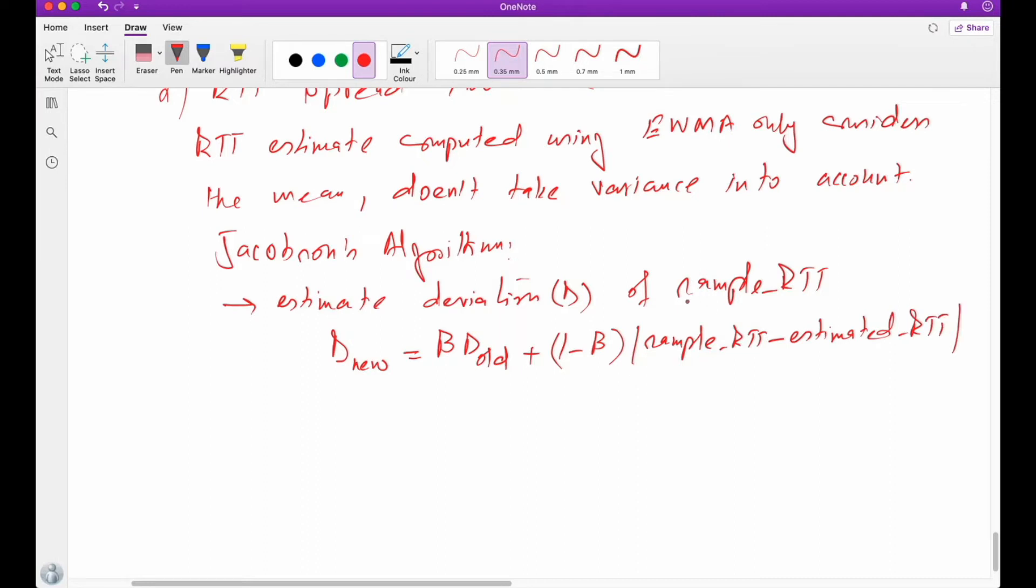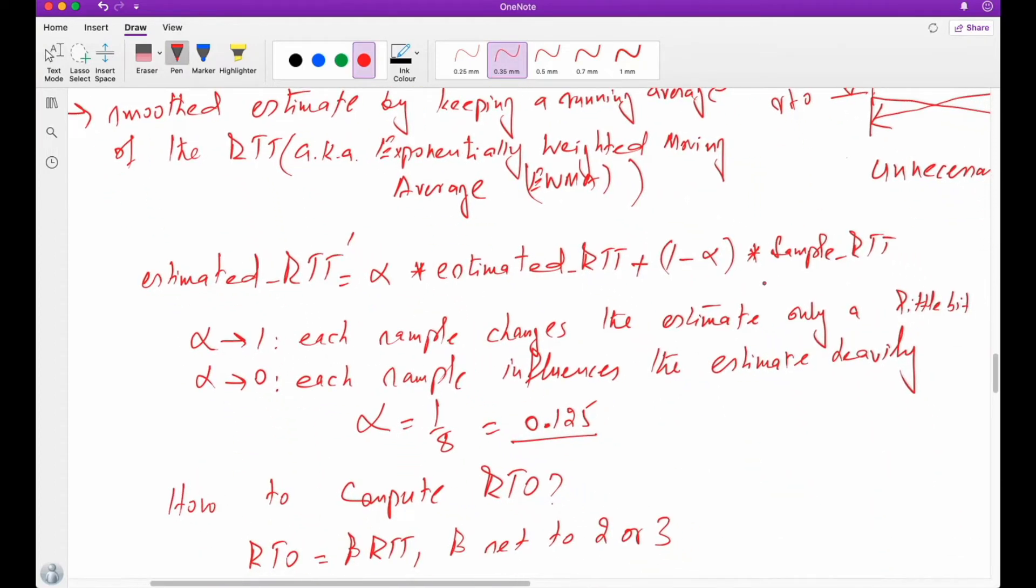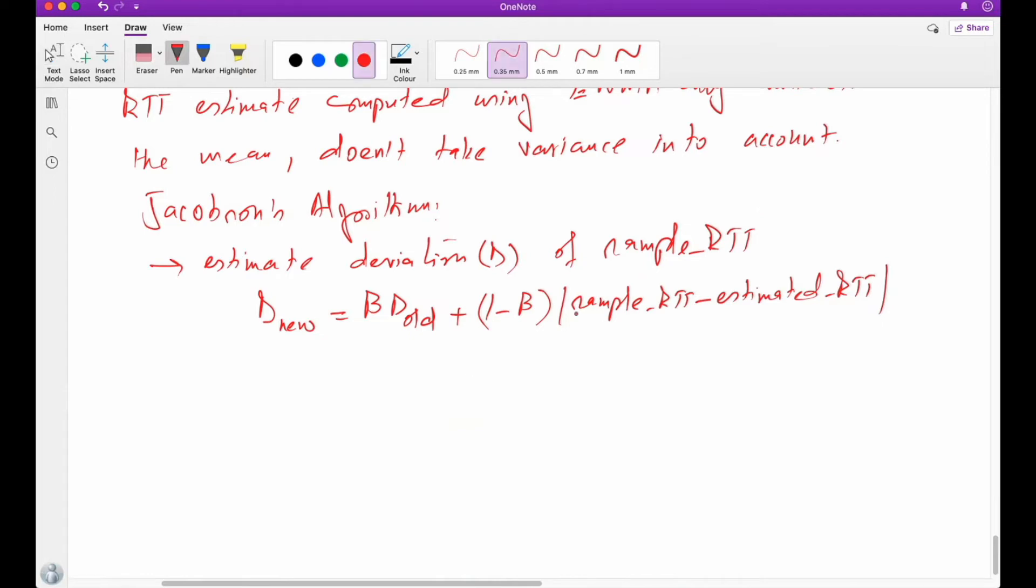So first remember there's no change in the calculation mechanism of sample RTT. It's the same that we have covered earlier. But in order to control or calculate or estimate the deviation, we'll calculate deviation nu by using this formula: D_nu is equal to beta into D_old plus one minus beta into the sample RTT minus the estimated RTT. The value of beta is 0.25. This will give me deviation of sample RTT.